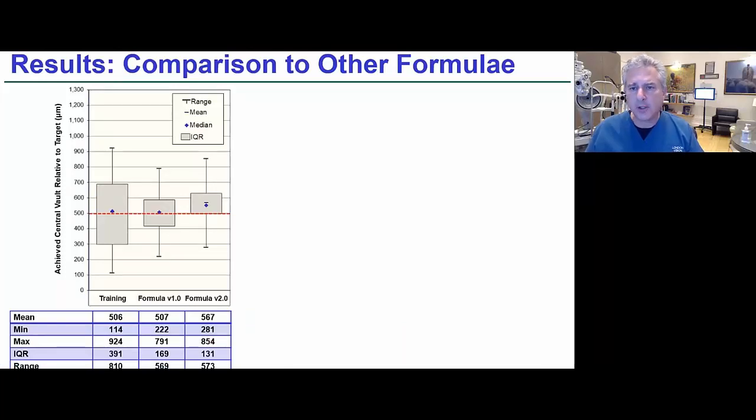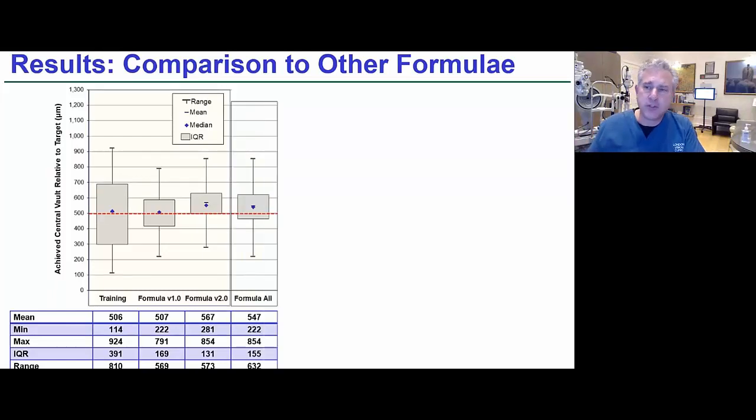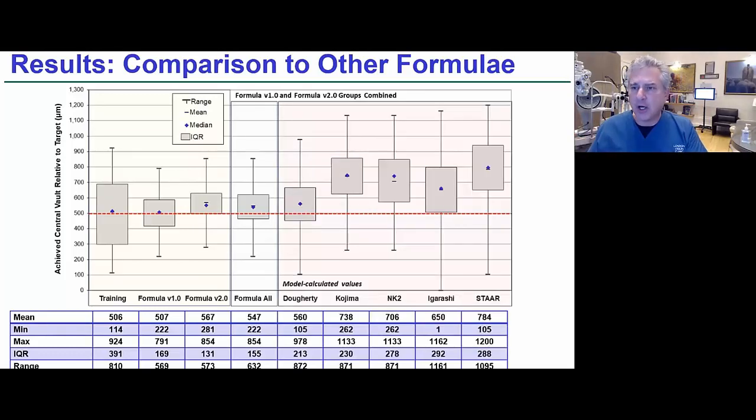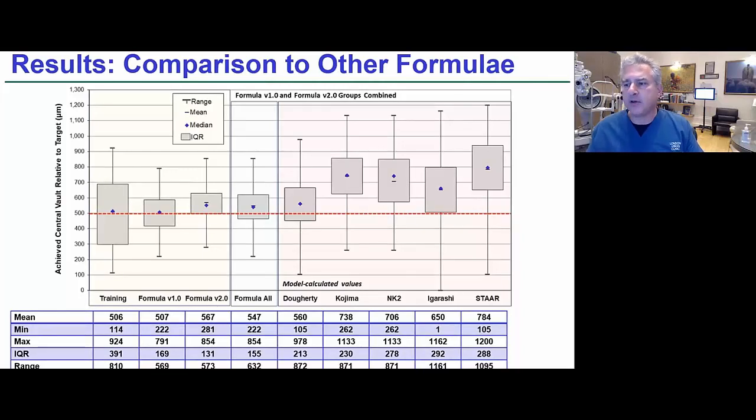Here is the training set. Here's the interquartile range with the training set using the Kojima formula and the Insight 100. Here was formula 1 and the interquartile range. And here's formula 2. For the sake of ease, in the paper which we've just submitted, we just combined formula 1 and formula 2 to give us the bigger numbers, even though it makes the results slightly less good than formula 2 alone. But here's the pooled results of our formula using the Insight 100.